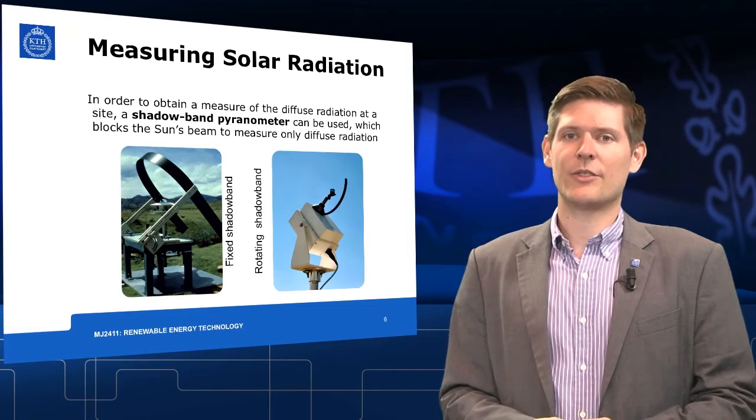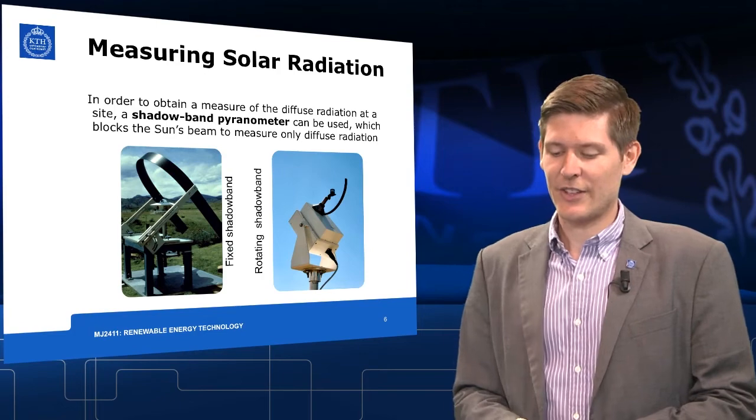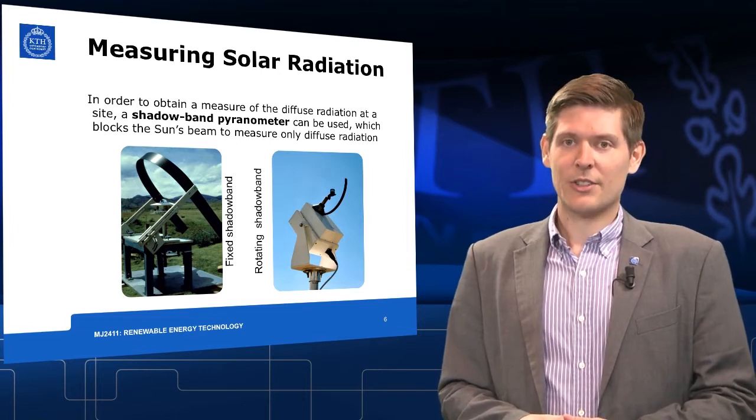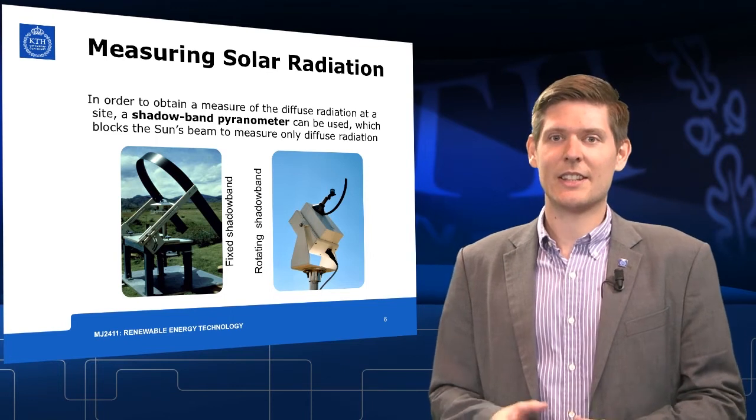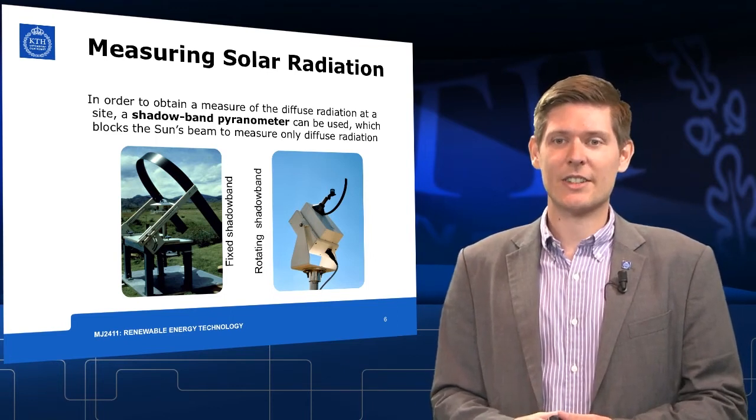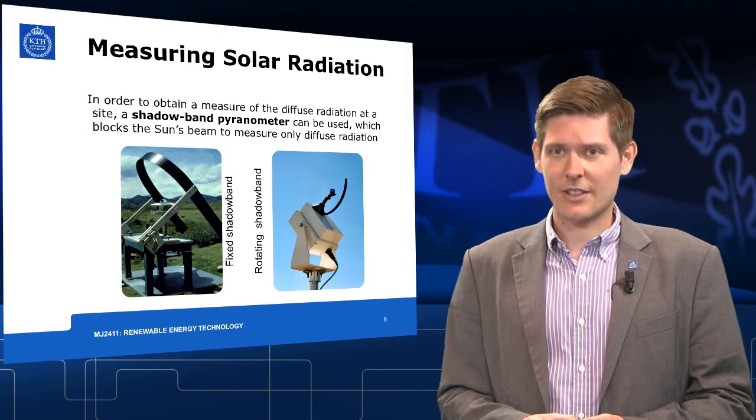There are commonly two different pyranometers with a shadow band used. We have on the left the fixed shadow band pyranometer, and on the right a rotating shadow band pyranometer. In the rotating shadow band pyranometer, the shadow band rotates within a matter of seconds and is able to measure both the total and the diffuse radiation. The fixed shadow band pyranometer is only able to measure the diffuse radiation.